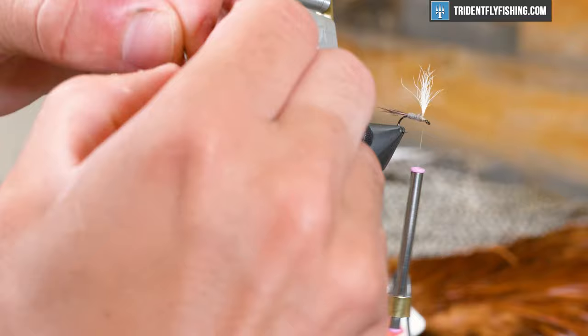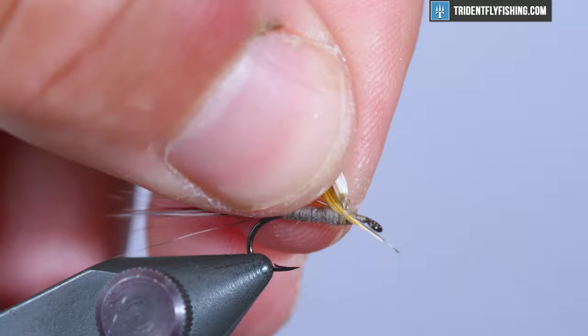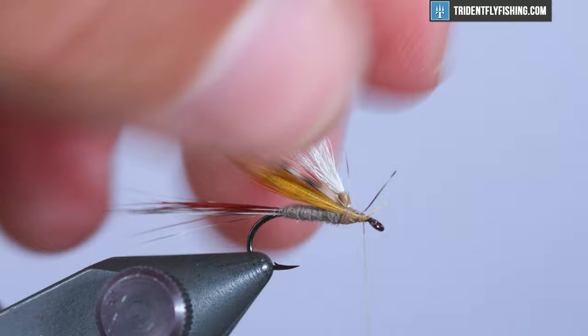Strip some fibers off so it's not super bulky. We'll tie those in with the shiny side facing away from us. Just right in front of your wing. Get those secured. And then you can snip off the excess.